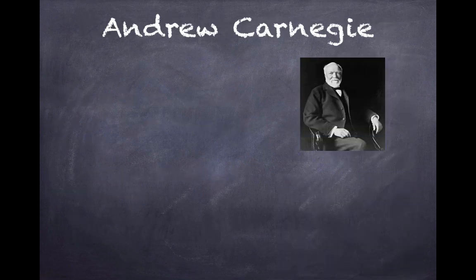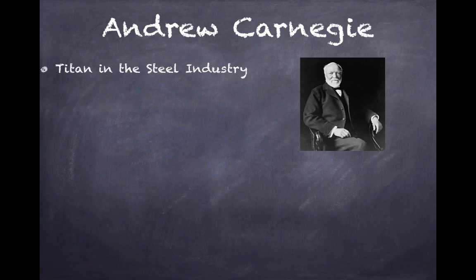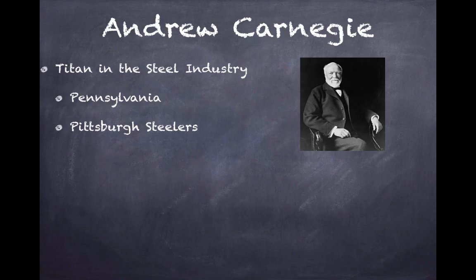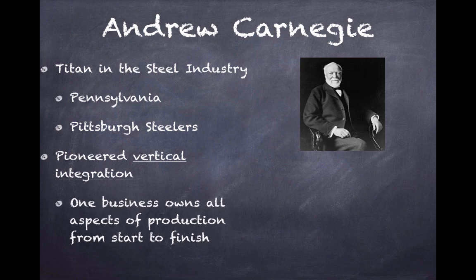Another key figure is Andrew Carnegie, a Scottish immigrant in the 1800s who was a titan in the steel industry. He helped perfect the Bessemer process and had his headquarters in Pittsburgh, Pennsylvania — hence the name of the Pittsburgh Steelers football team. He pioneered vertical integration, where one business owns all aspects of production from start to finish. He owned the land where iron ore came from, the factory that produced the steel, and everything used to ship it — so from start to finish, under vertical integration, a business owns everything and never goes to an outside company.